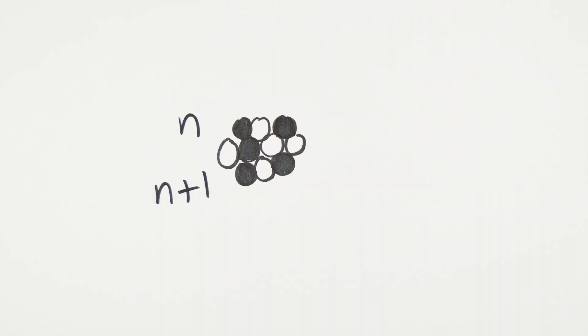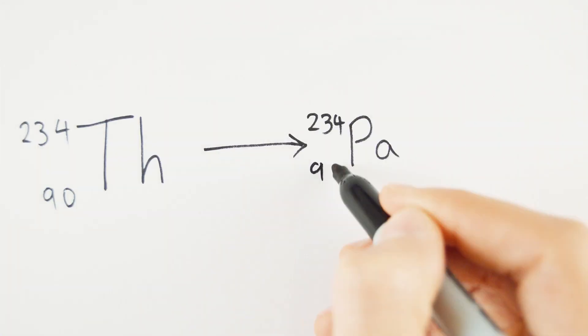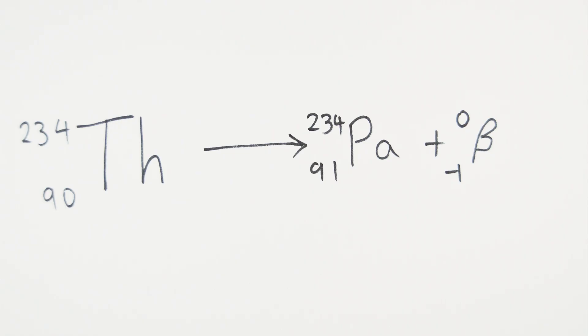So the mass number stays the same, but the atomic number increases by one. For example, thorium-234 decays into protactinium-234 and a beta particle is released.